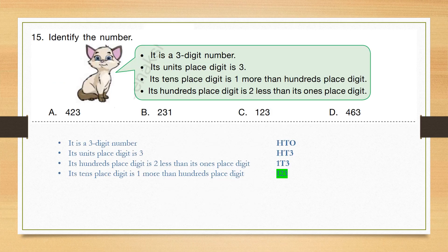Question number 15: Identify the number — it is a 3-digit number. Let's write HTO. Its unit place digit is 3, so replace O by 3. Its 100s place digit is 2 less than the 1s place digit — we know the 1s place is 3, and 2 less than 3 is 1, so the 100s digit is 1. Then the 10s place digit is 1 more than the 100s place digit, so 10s is 2. The number is 123. Correct option is C.